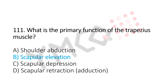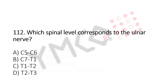Now let's move to question number 112. Which spinal level corresponds to the ulnar nerve? Option A, C5, C6. Option B, C7, T1. Option C, T1, T2. Option D, T2, T3. And the answer is Option B, C7, T1.